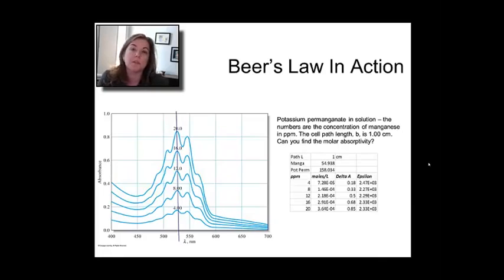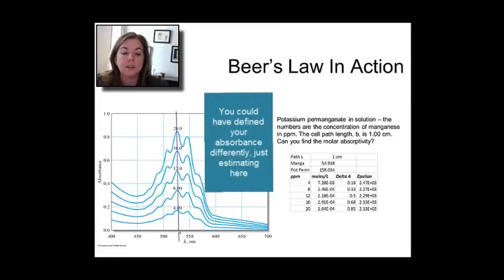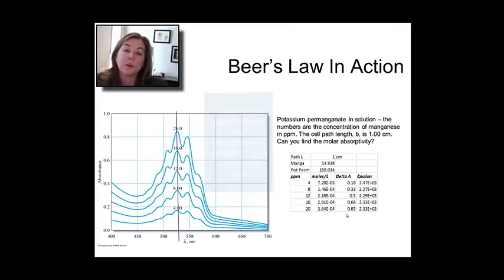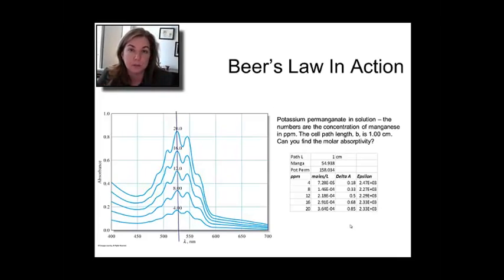I took a path length of a centimeter and the atomic weight of manganese. First I had to convert everything to molar since they're asking for molar absorptivity. Then I looked at delta A, the change in absorbance rather than the net absorbance. I defined epsilon as the absorption divided by the concentration times the path length. I get a variety of different epsilons probably because I'm estimating the delta A, but at least they're in the right ballpark. This is the molar absorptivity for potassium permanganate.